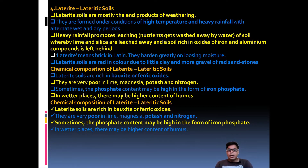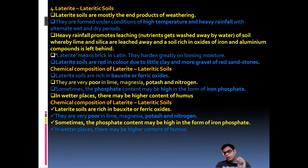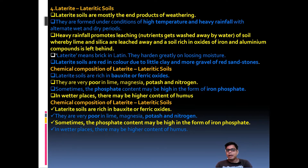The soil becomes rich in oxides of iron and aluminium compounds. When all the humus and other materials leach down into the soil, only silica and lime remain. 'Laterite' means brick in Latin, and these soils harden greatly on losing moisture. Laterite soils are red in color due to the clay and gravel of red sandstone.